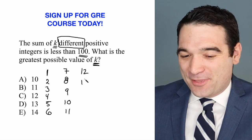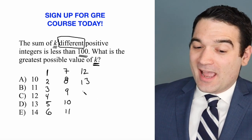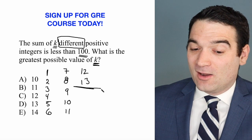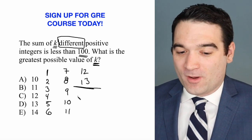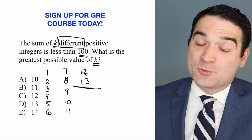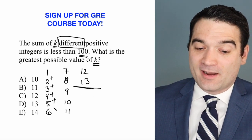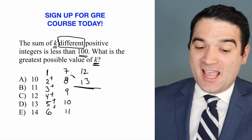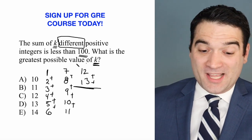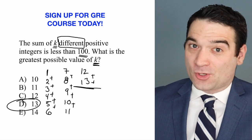Add 13 for 91. And then if I add 14, I've overshot 100. So that means I need 1, 2, 3, 4, 5, 6, 7, 8, 9, 10, 11, 12, 13 numbers, all added together, to stay under 100. And this is the most number of numbers that I could use. That means D is the correct answer.